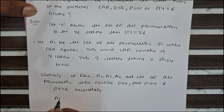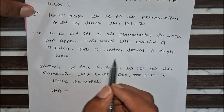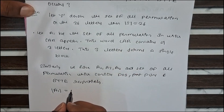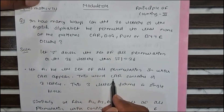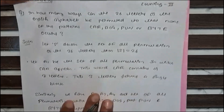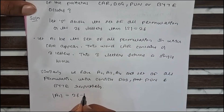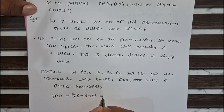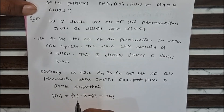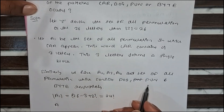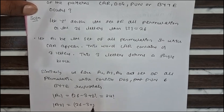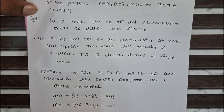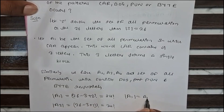Now, what is the value of |A1|? The word 'car' contains three letters, so these three letters form a single block. So we can arrange: 26 minus 3 plus 1, whole factorial, equals 24 factorial. As we can clearly see, A1 = A2 = A3 = 24 factorial, since 'car', 'dog', and 'bone' each contain three letters.